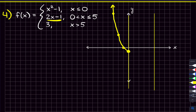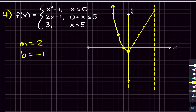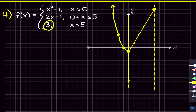The second piece is y equals two x minus one — slope two, y-intercept negative one. The y-intercept at negative one is already marked from the parabola. Using slope up two over one, we continue until we reach the boundary at x equals five. Since this piece applies for x less than or equal to five, we place a closed circle at x equals five.